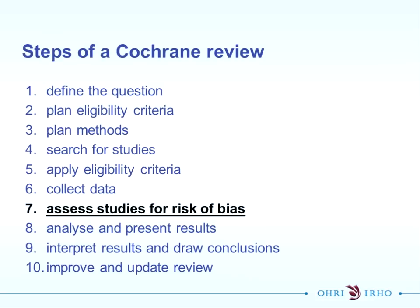In terms of steps of a Cochrane Review, where are we with this process? You've gone through your screening, you've identified your studies, you've collected your data, and now you're assessing your studies with potential risk of bias. These are fairly interchangeable with data extraction - you can do it simultaneously. You can ask two people on your team to do data extraction and two people to do risk of bias assessments.